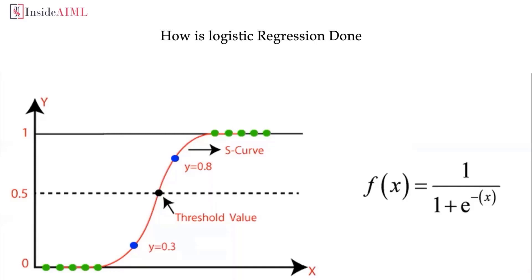After doing that, we set a threshold value. We set the threshold because we want the answer to be either 0 or 1 — we do not want just the probability. So if the answer is above the threshold, we set it to 1, and if below the threshold, we set it to 0. For example, if the answer is 0.8, we set it to 1; if it's 0.3, we set it to 0.